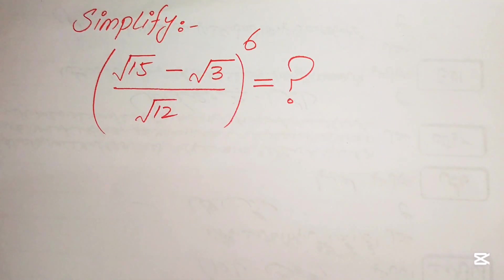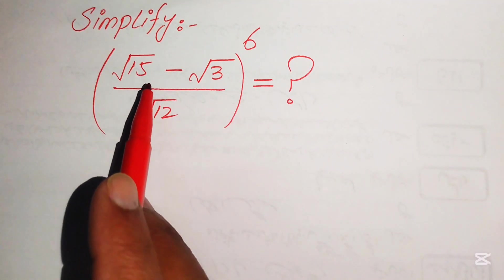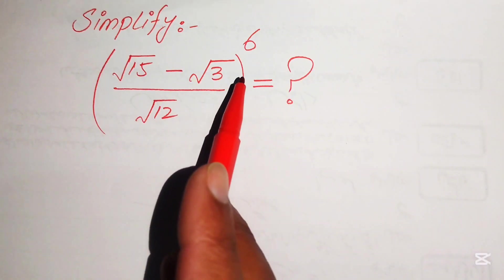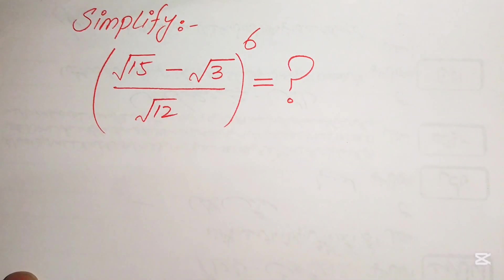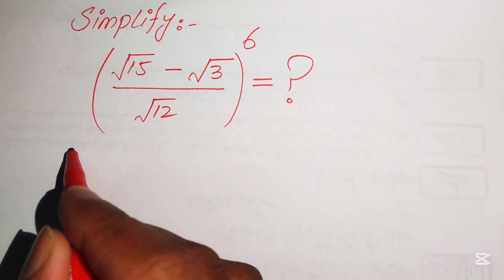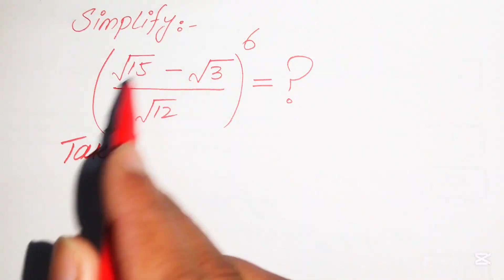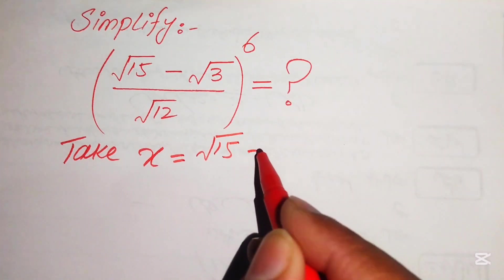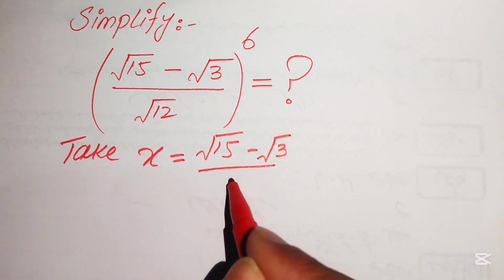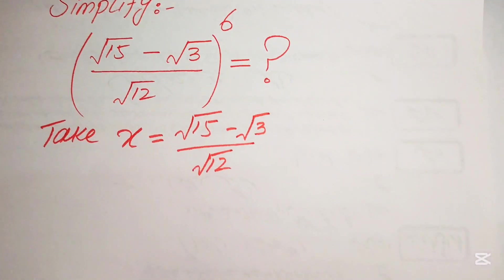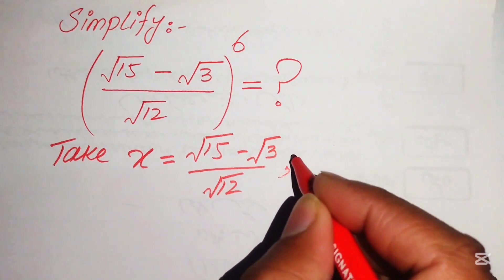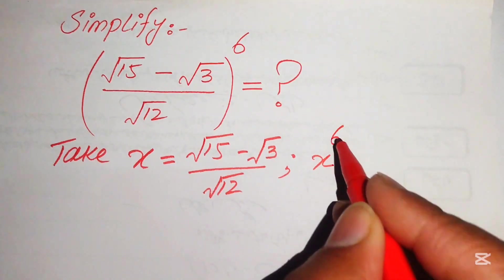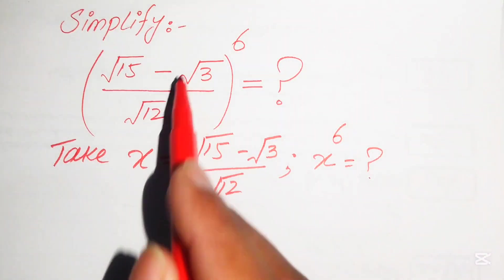Hello everyone. How to simplify this nice algebraic expression: the square root of 15 minus square root of 3, divided by square root of 12, and its whole power is 6. We simplify this algebraic expression into simplified form. The very first step is to let the base equal x, so x equals the square root of 15 minus square root of 3 divided by square root of 12. We choose base equal to x, then in order to simplify the whole expression we need to find the value of x to the power of 6.